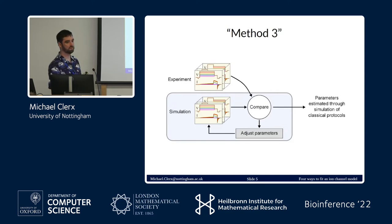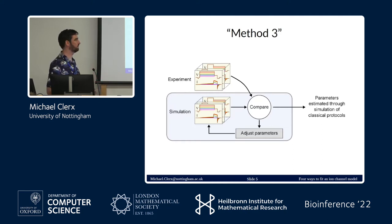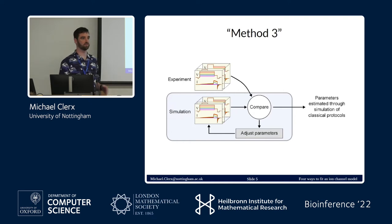Method two is slightly better than method one at getting good fits, allows fitting more complicated models, and you don't need to cooperate. If you think about it more, you wonder: why do we need these summary statistics? If we have this data, why not just fit to it directly? That's what I call method three. This requires the experimenter to give you the time series data, which they don't usually do because you couldn't do it in the 90s.